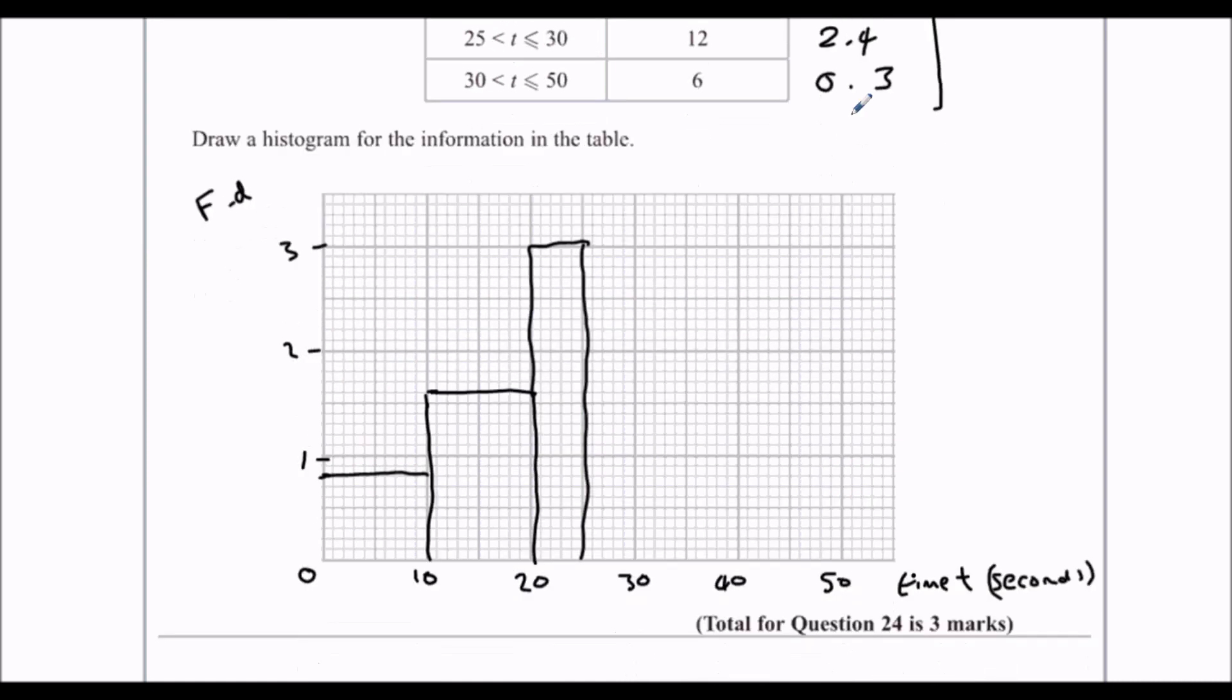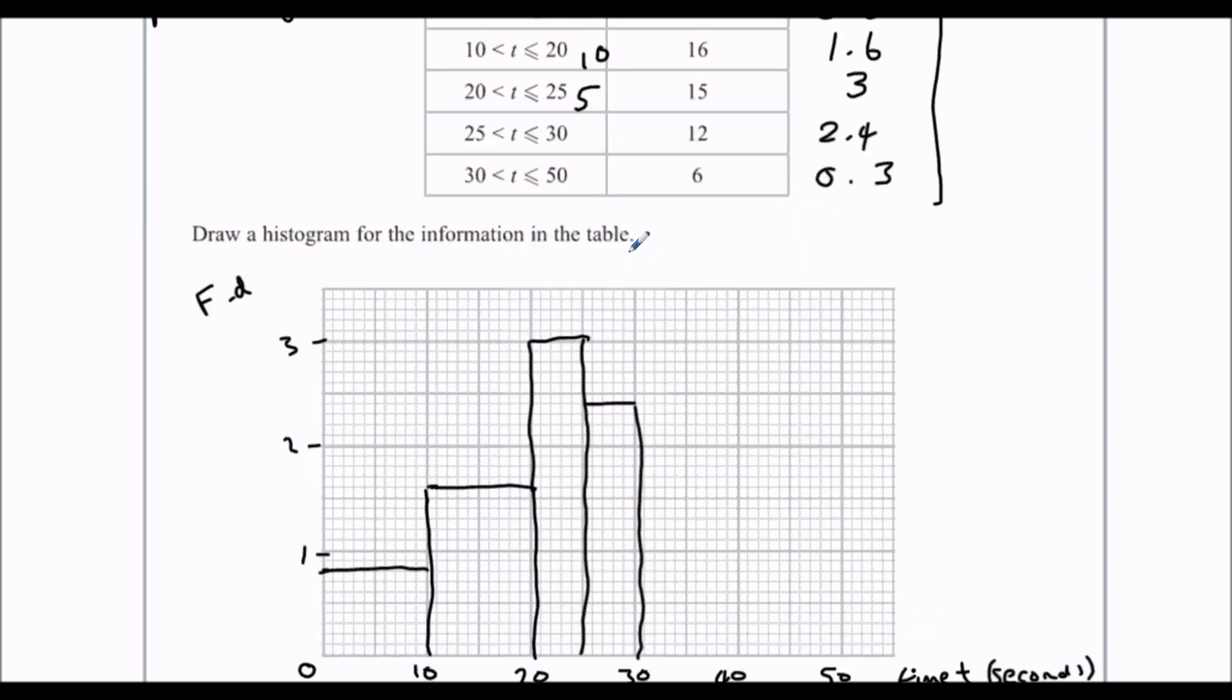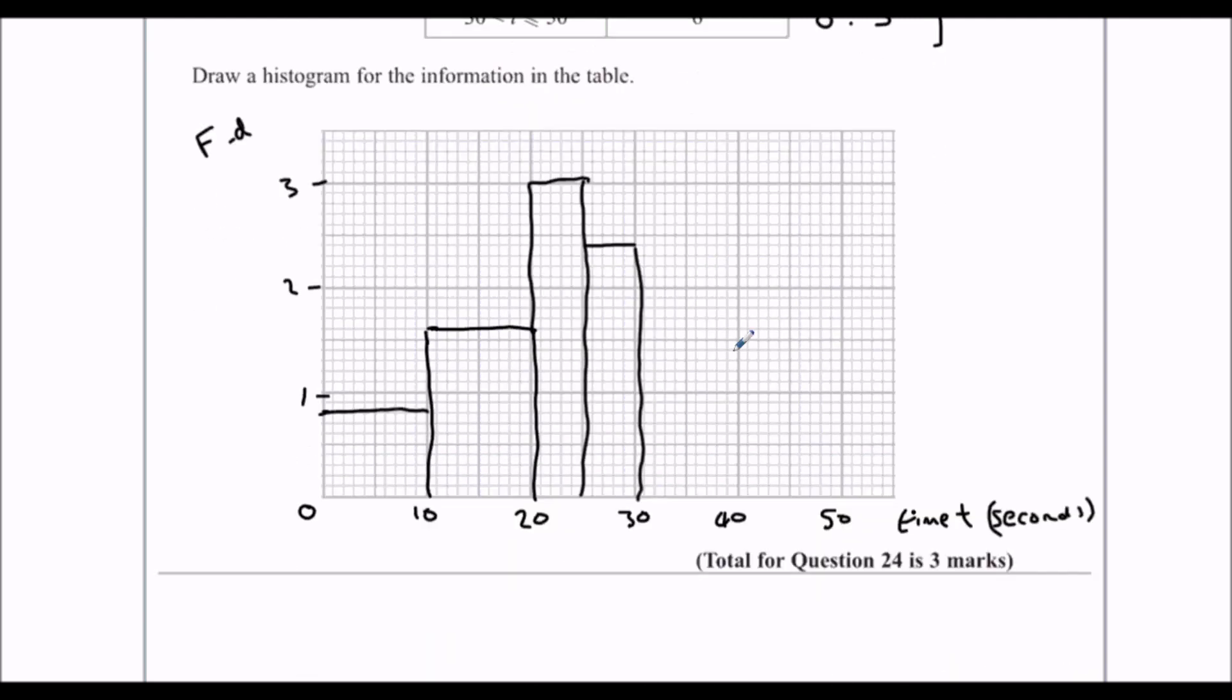25 to 30 goes up to 2.4. And 30 to 50 goes up to 0.3. So 1, 2, 3. And your histogram should look like that, obviously, with straight lines.